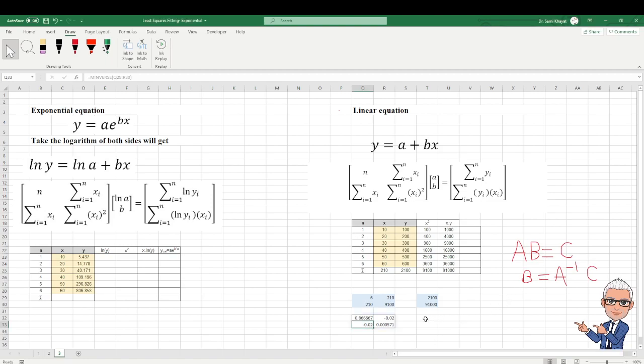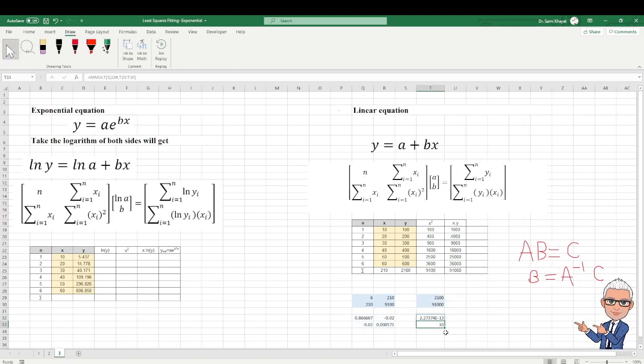And then I will highlight it and enter. Now, next I need to multiply this inverse by C. Here I will multiply the inverse, this one by this C equals multiply matrix. This is the first one and the second one, this is the second matrix. This is the final answer, which will be something like 0 plus 10.